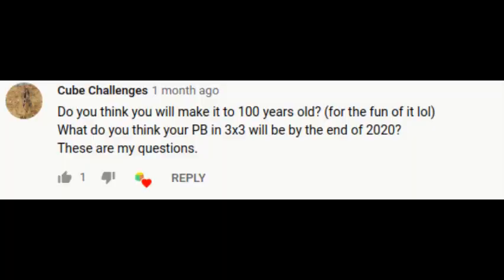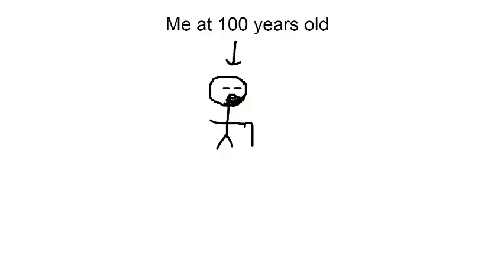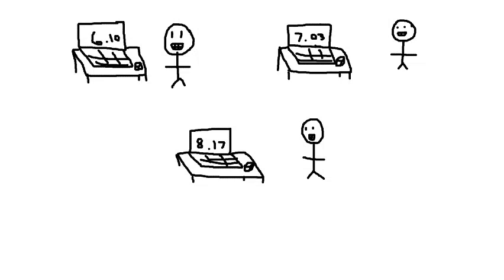Now, the final questions come from Cube Challenges and she asks, do you think you'll make it to 100 years old for the fun of it? And what do you think your PB in 3x3 will be by the end of 2020? So, for the first question, yes, I'd definitely make it to 100 years old as long as I stay really healthy. And my PB at the end of 2020, I'd say like a 6.1 or a 7.0 around those times. So, my current PB is an 8.1. And probably by the end of 2020, I'd say I'd get like a low 6 or a low 7. I'm not really sure.